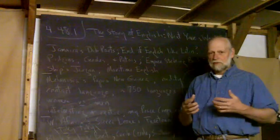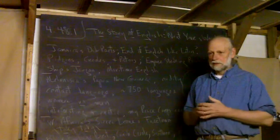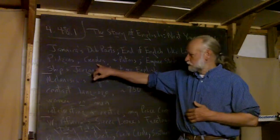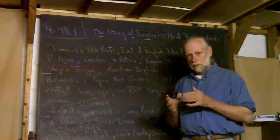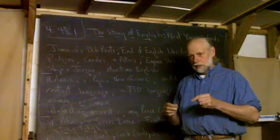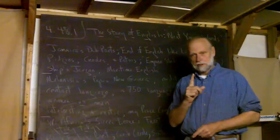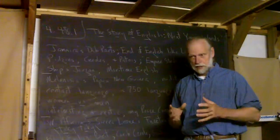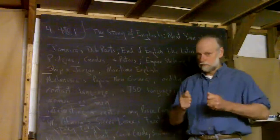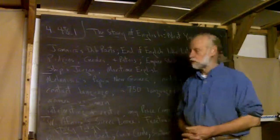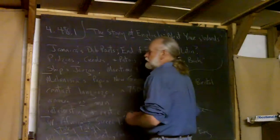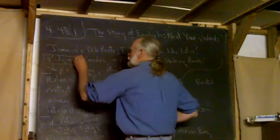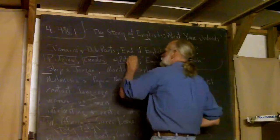A pidgin is a contact language, a mixture of two languages used in order to communicate. And then a creole is, as he explains later, when a pidgin becomes children's first language, that pidgin becomes a creole. So these are linguistic terms, and I'm finally more ready to explain them.